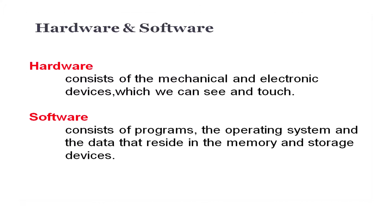Hardware consists of mechanical and electronic devices which we can see and touch — for example the keyboard, the mouse, the monitor; all these are hardware devices. Software consists of programs, the operating system, and the data that resides in memory and storage devices.